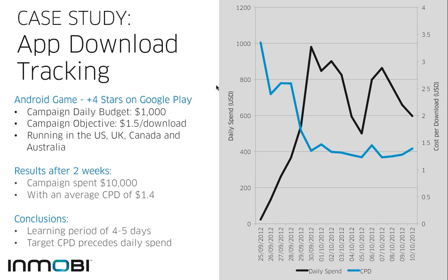As you can see, spend goes up in the first five days while cost per download goes down, until we reach a steady state achieving the target CPD. The second learning is that once we achieve the target CPD, our optimization loop prioritizes hitting the CPD over burning the budget. If there's not enough good inventory to achieve the target CPD and the daily spend, we'll reduce daily spend to make sure we're achieving the cost per download — we won't start spending on bad inventory just to burn the campaign. We spend only on good inventory and maintain a stable cost per download.